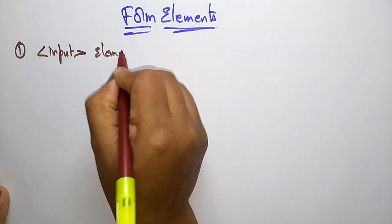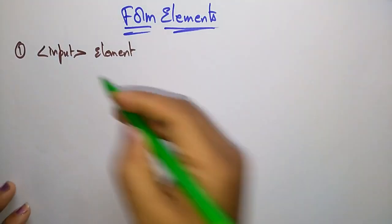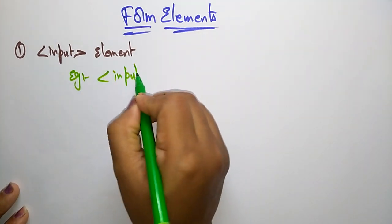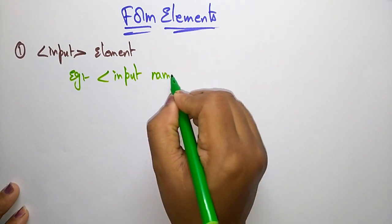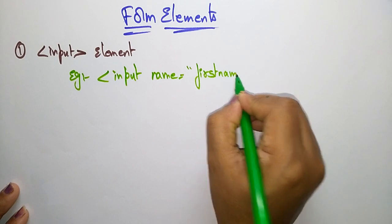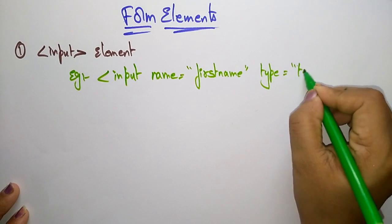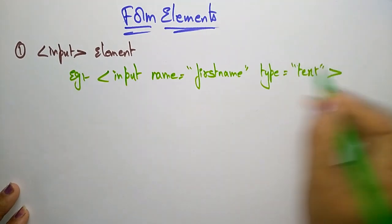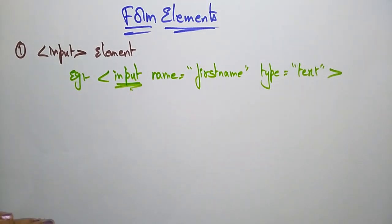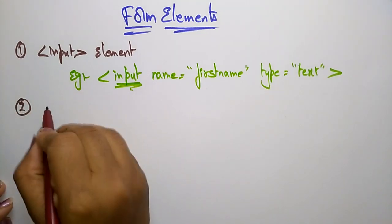Let me take one example: input with attribute name equal to 'first name' and type equal to 'text'. In the text field you have to write the first name. So this is one of the form elements — the input tag. Now let's see the second form element, which is the select element.